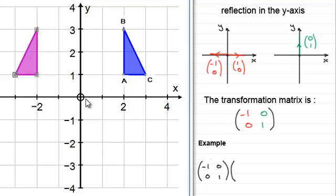So O to A is (2, 1). When it comes to B, O to B is (2, 3). And for C, O to C is (3, 1). So that's our matrix which defines our shape.